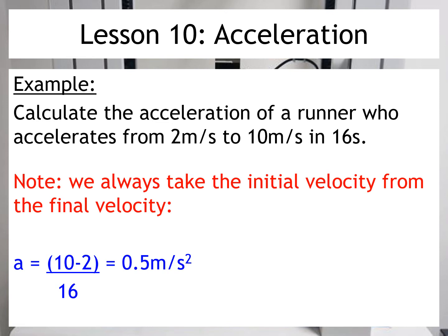You'll notice that we always take the initial or starting velocity away from the final velocity. So if we have a look up here, this is the final velocity, and so I've put that into the calculation first down here. Then I've gone back to the starting or initial velocity and that's gone into the equation second. And that's why I get 10 minus 2 equals 8 divided by 16, which gives me 0.5 metres per second squared.